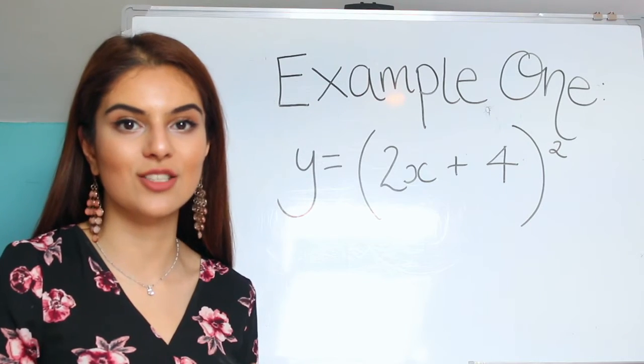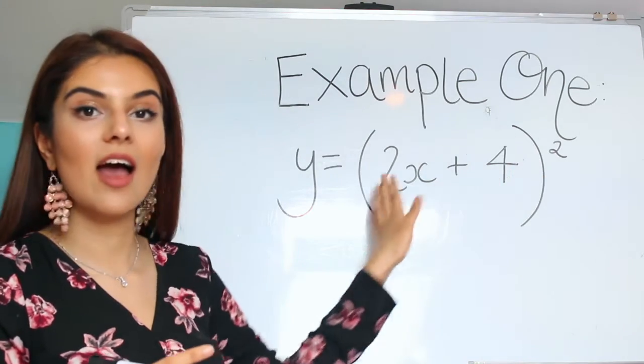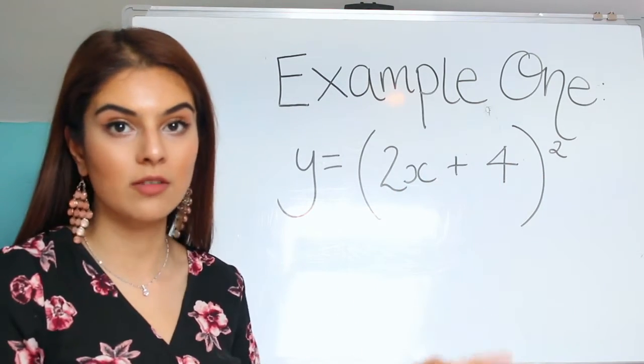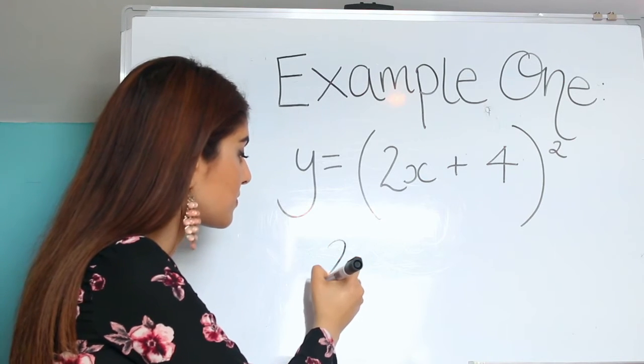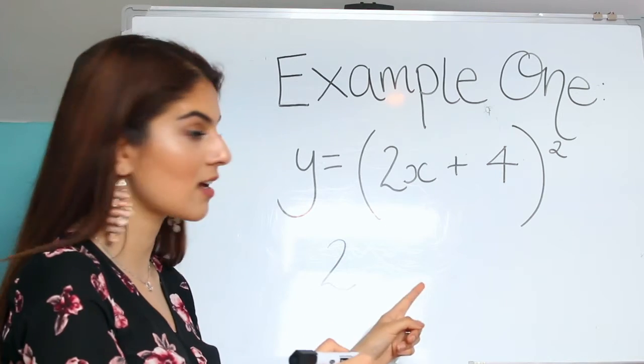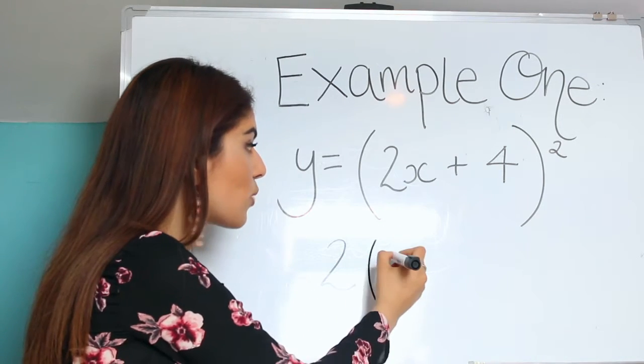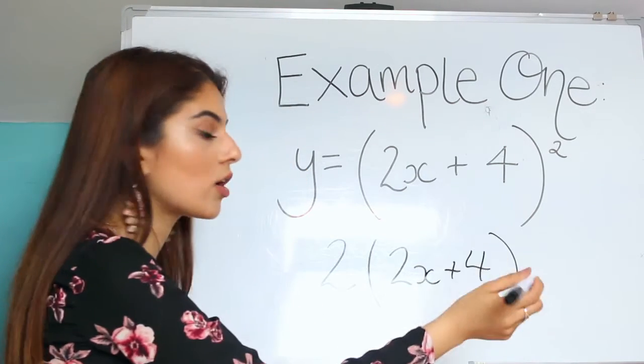So what differentiation is, is you times it by the power and then you reduce the power by 1. So if we times it by the power, that would be 2. Remembering to leave the inside the same, so that would still be 2x plus 4. And we reduce the power by 1.